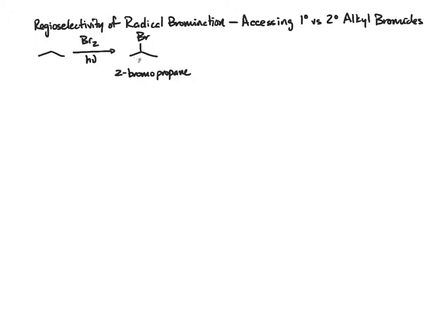This would be classified as a secondary alkyl bromide. The other potential product that could form would be 1-bromopropane, and this would be considered a primary alkyl bromide.